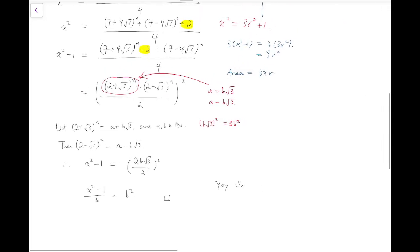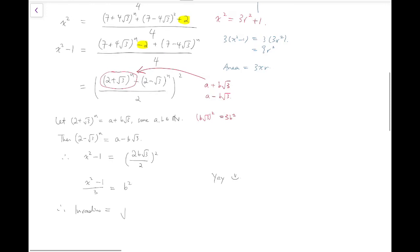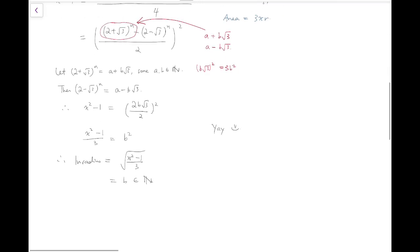This completes our proof. Of course, we can add some more words at the end. Therefore, inradius, which is the square root of x squared minus 1 over 3, equals b, is a natural number. And so area equals 3xr is also an integer, also a natural number, because x itself is a natural number. And yes, that will complete the proof.